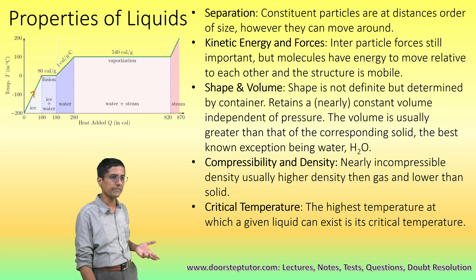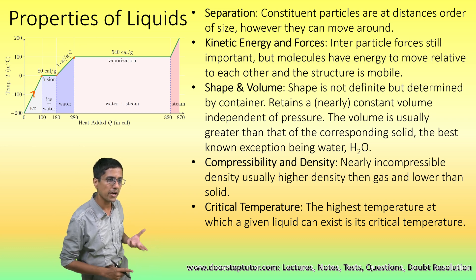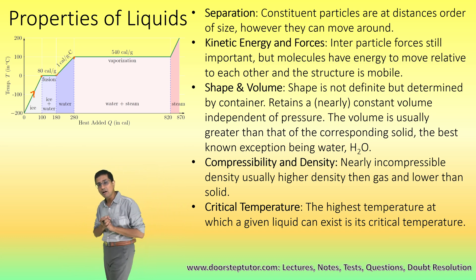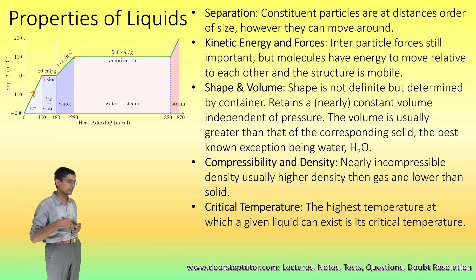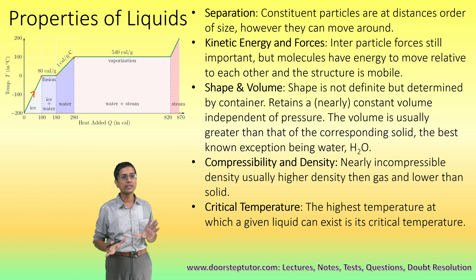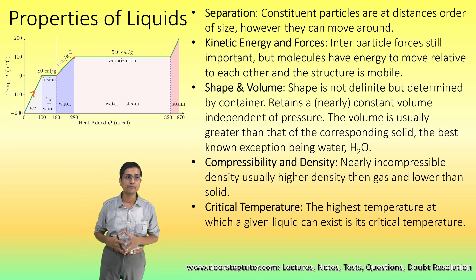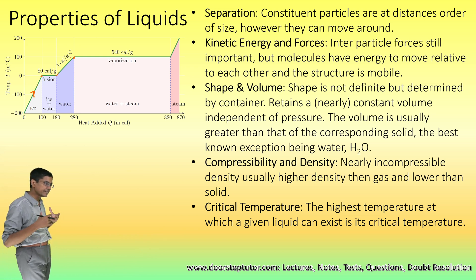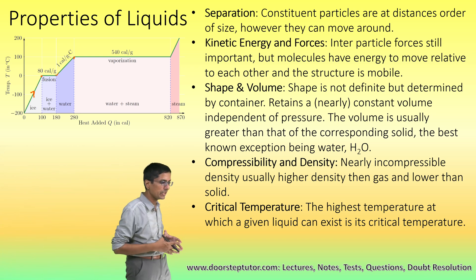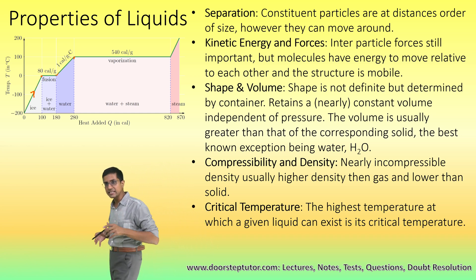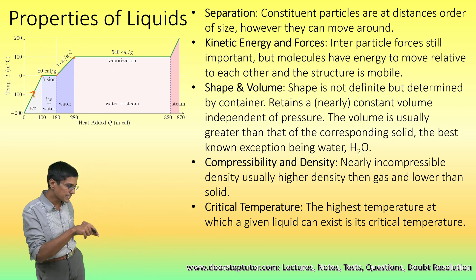After that, if we further heat the water, we reach a point where water starts converting into gas — the gas of water is known as steam, or water vapor. Until all the water is converted into steam, the temperature will not increase; it stays stuck at 100 degrees Celsius, as shown in the diagram. The separation between particles in a liquid is still on the order of the size of the particles composing it, but they are not stuck in one position — they are free to move around.